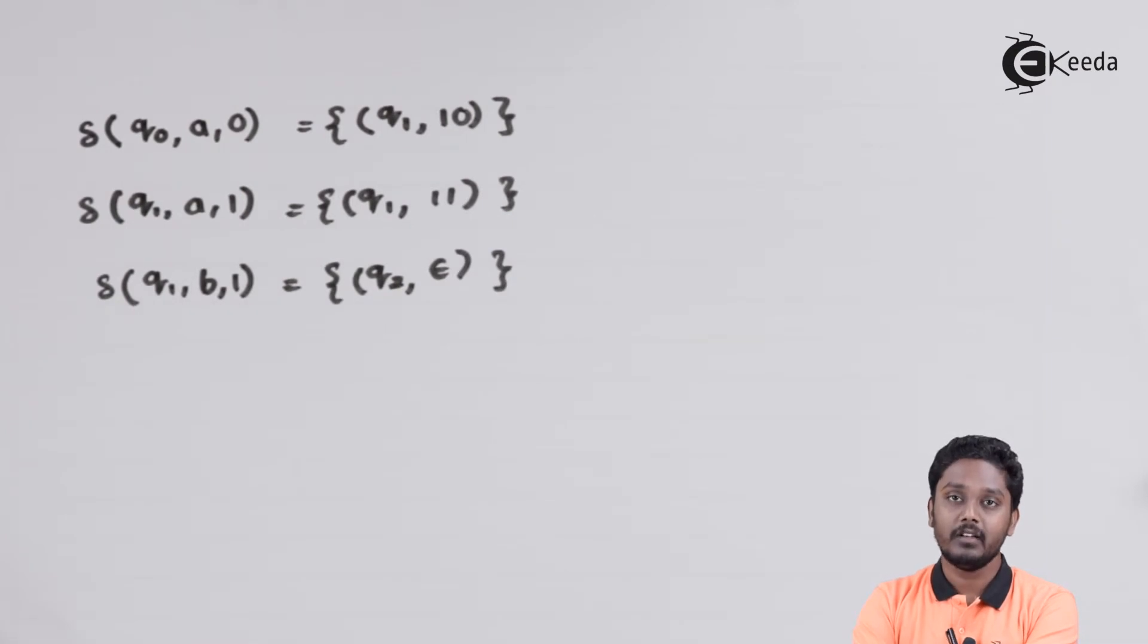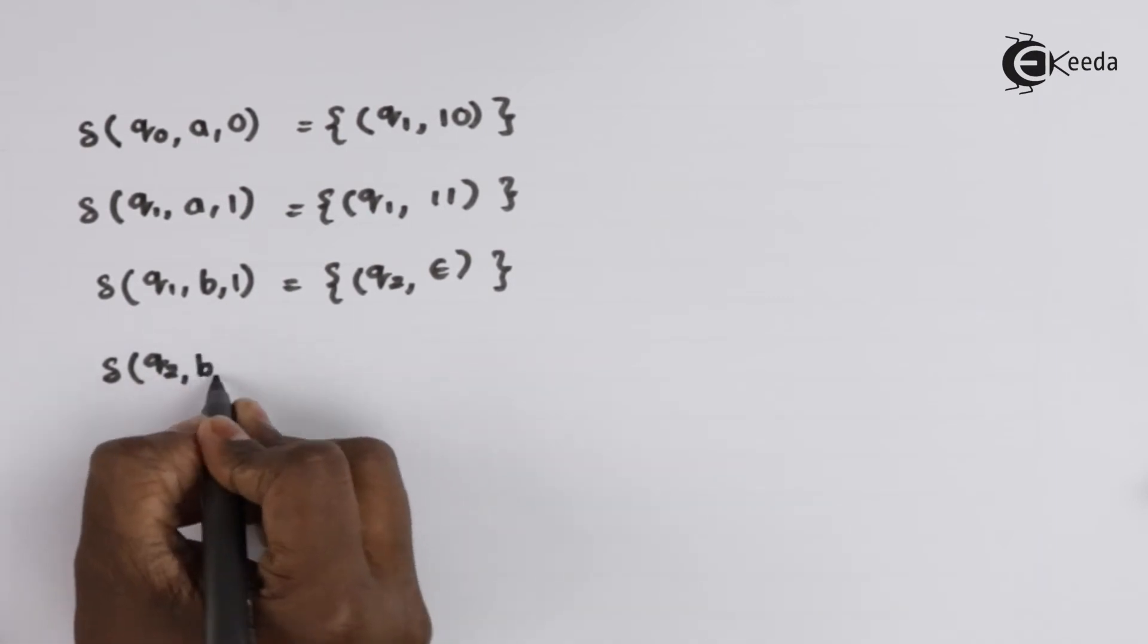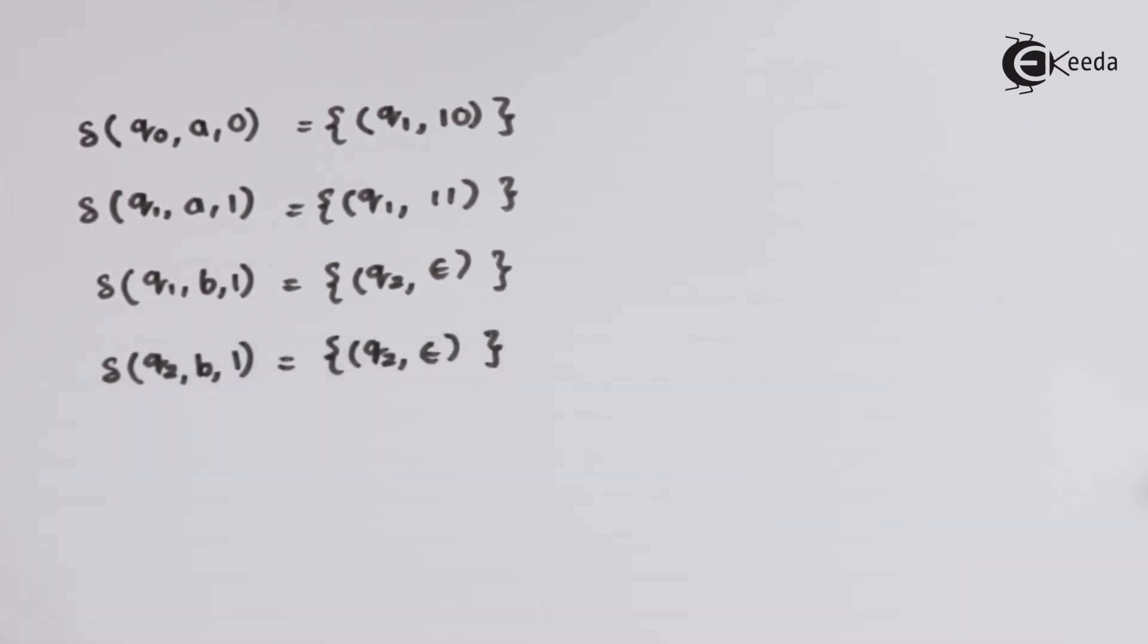From state Q1 at the encounter of first B, we pop out the first 1 off the top of the stack and go to state Q2. From state Q2, with every B, we have to remove 1 from the top of the stack.